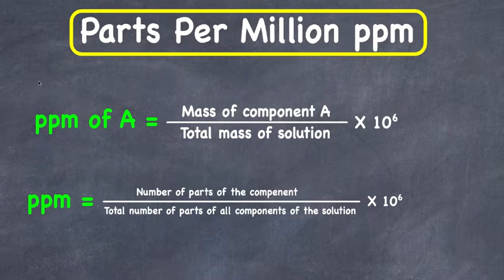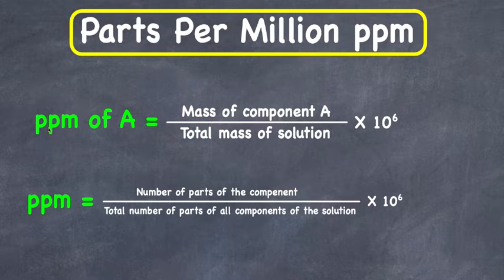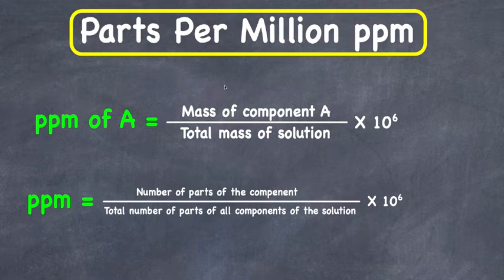In this video I'm going to go over another unit of concentration of solution known as Parts Per Million. When a solute is present in very small amounts, the concentration is expressed as Parts Per Million, or PPM in short. It is the parts of the component per million parts of the solution. If we have a component A in the solution and the mass of the component is very very small, then the Parts Per Million of this component A is...